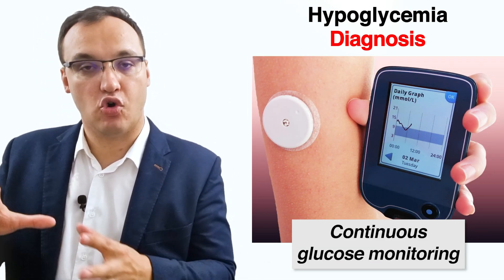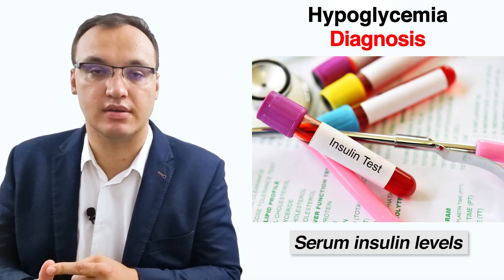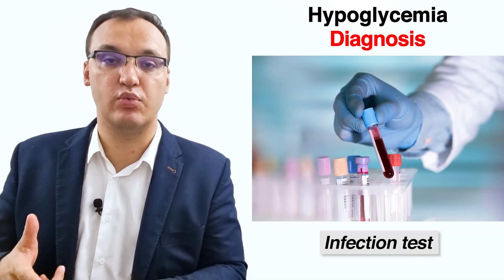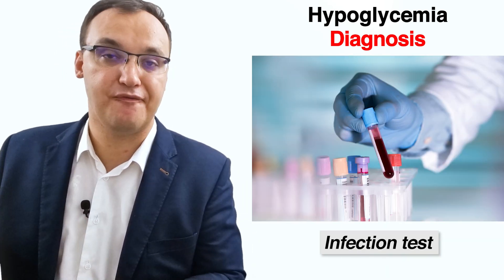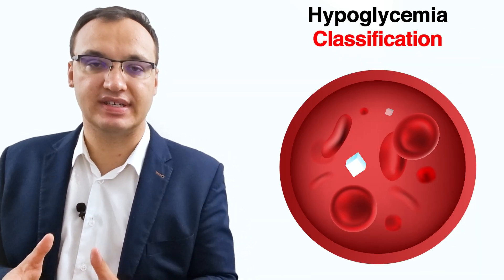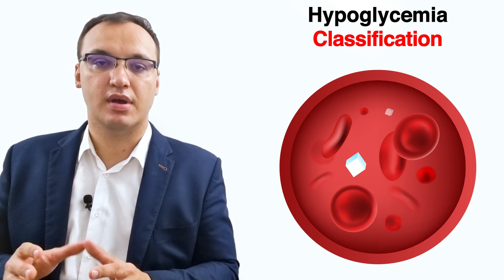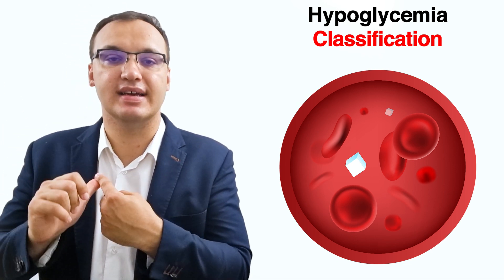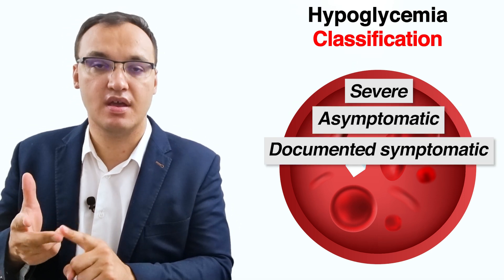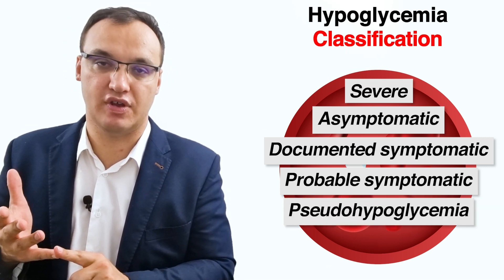In the hospital, they will also check liver function tests, serum insulin, cortisol, thyroid levels, and blood tests for infection. There is a classification based on the diagnosis, and we can classify hypoglycemia into five main groups: severe, asymptomatic, documented symptomatic, probable symptomatic, and pseudo-hypoglycemia.